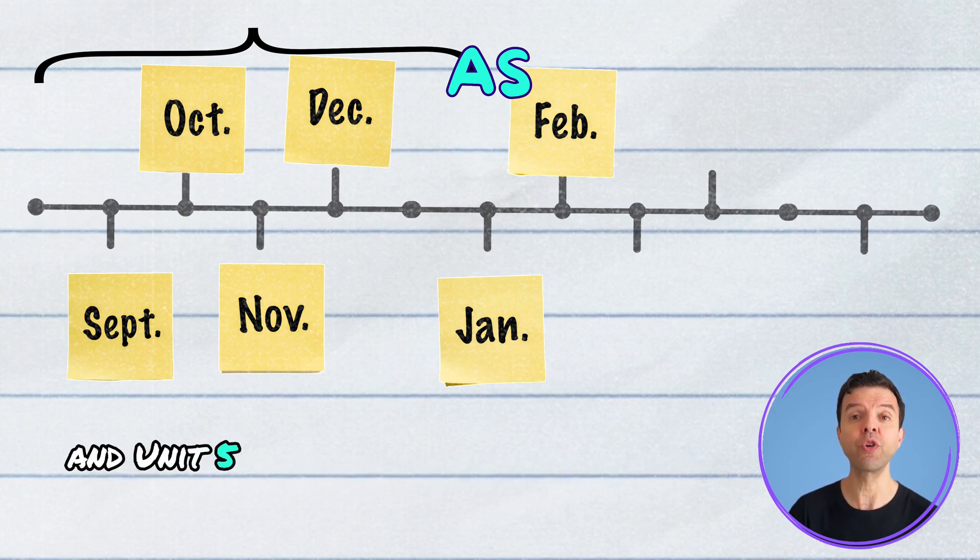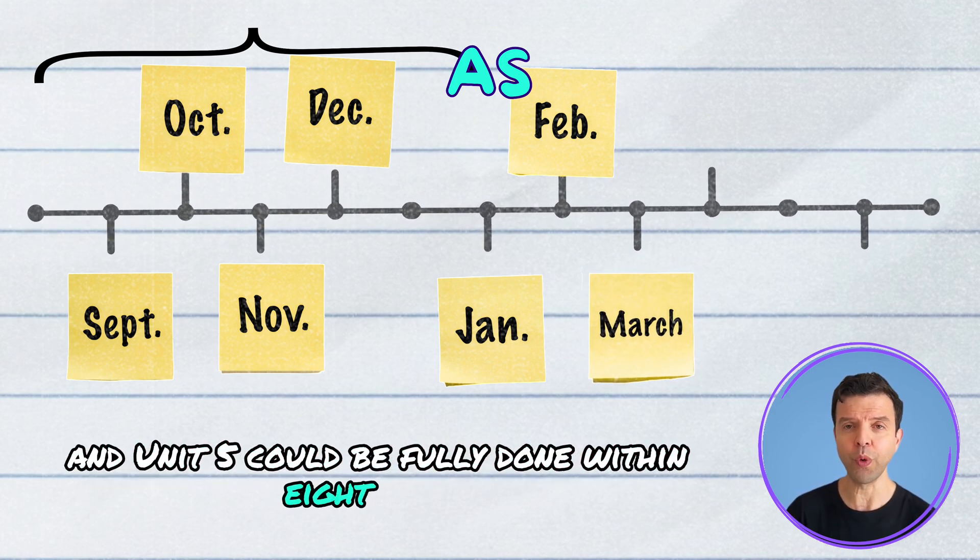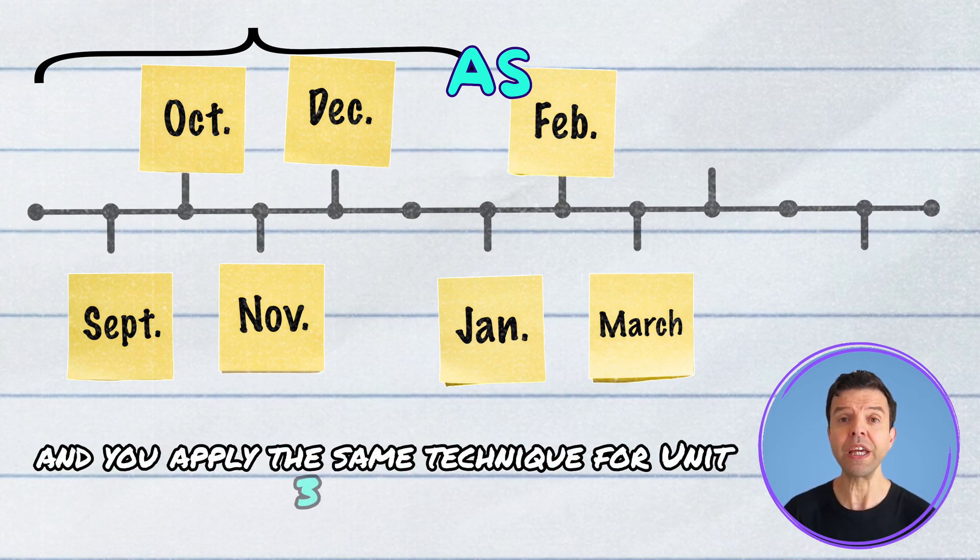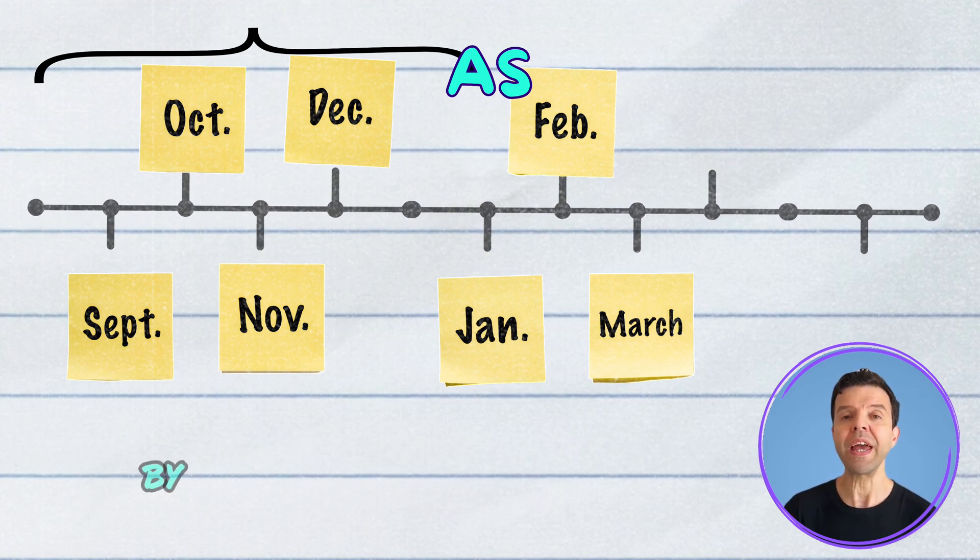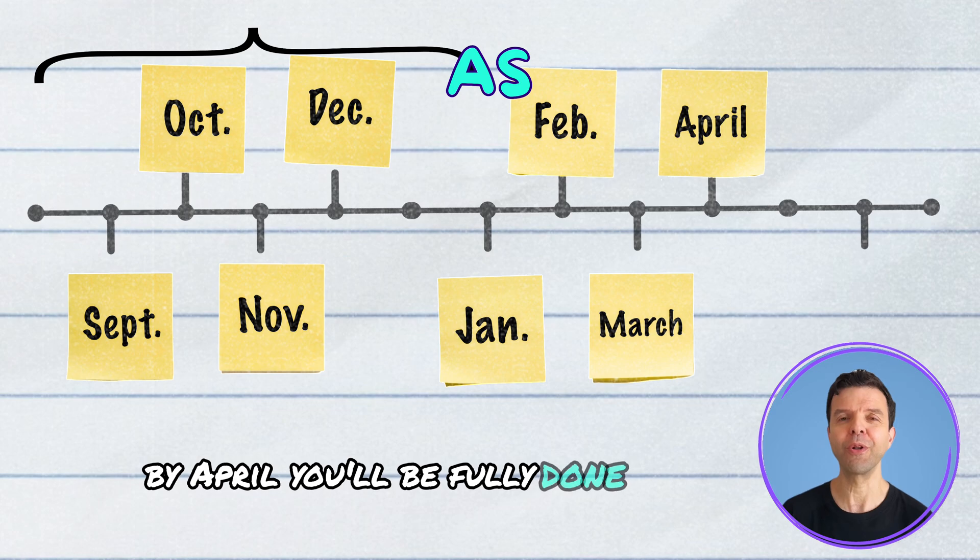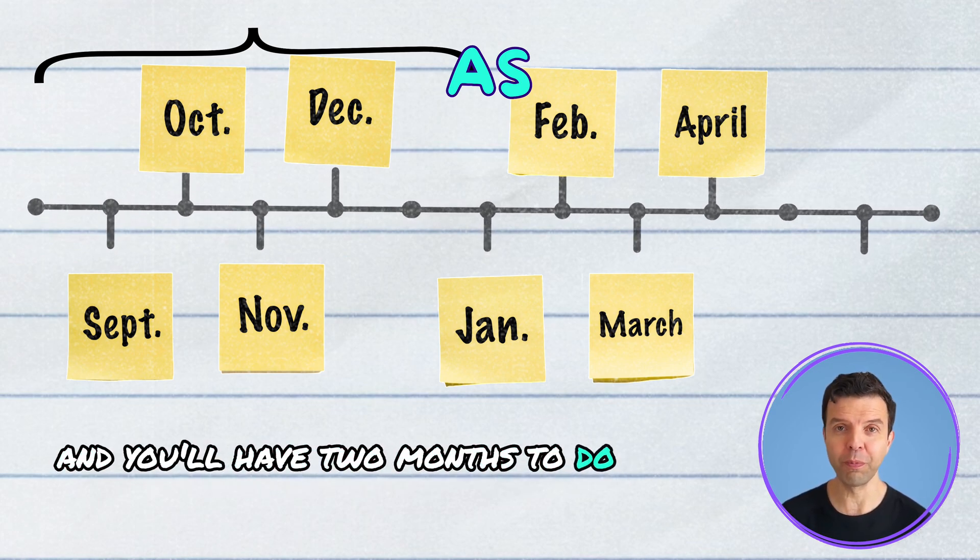Unit 4 and Unit 5 could be fully done within eight weeks, and you apply the same technique for Unit 3 on Unit 6. By the end of April, you'll be fully done and you'll have two months to do full past papers.